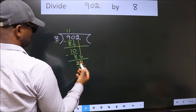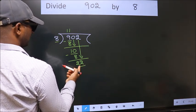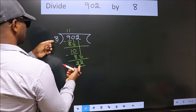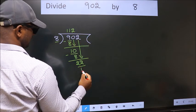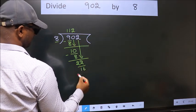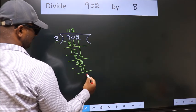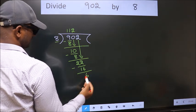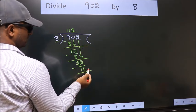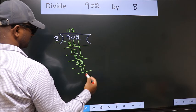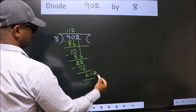So 22. A number close to 22 in the 8 times table is 8 twos 16. Now we subtract. We get 6. No more numbers to bring down, so we stop here. This is our remainder. This is our quotient.